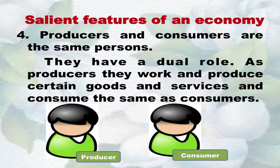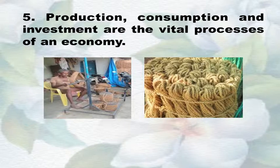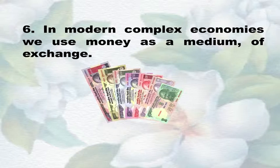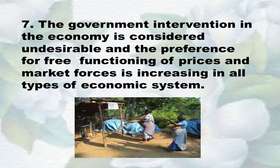As producers, they work and produce certain goods and services, and consume the same as consumers. Number five: Production, consumption and investment are the vital processes of an economy. Number six: In modern complex economies, we use money as a medium of exchange. Number seven: Nowadays, the government intervention in the economy is considered undesirable, and the preference for free functioning of prices and market forces is increasing in all types of economic system.